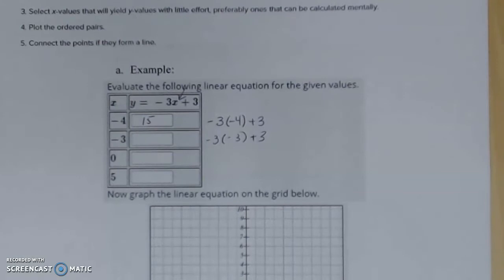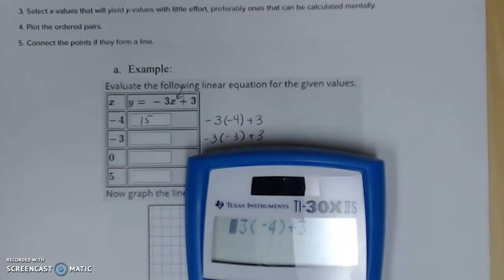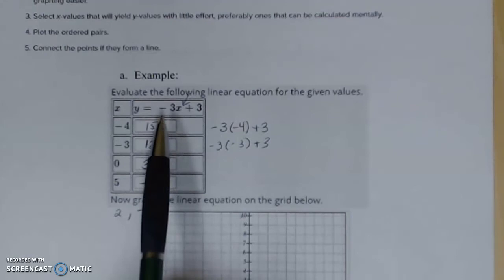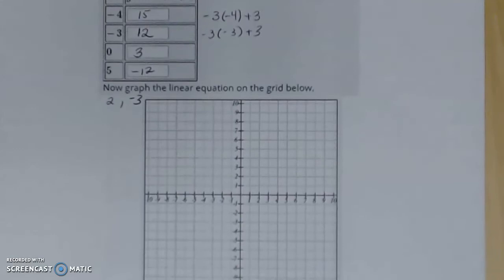You would do this again for the next value. Again, placing your value where your variable was using parenthesis, following all order of operation rules, and this would yield a value of 12. Jumping ahead, I went ahead and filled in my 0 and my 5, just like I did above. Then I went ahead and grabbed me an extra point, because I noticed these were really large values, larger than the grid I'm looking at below.